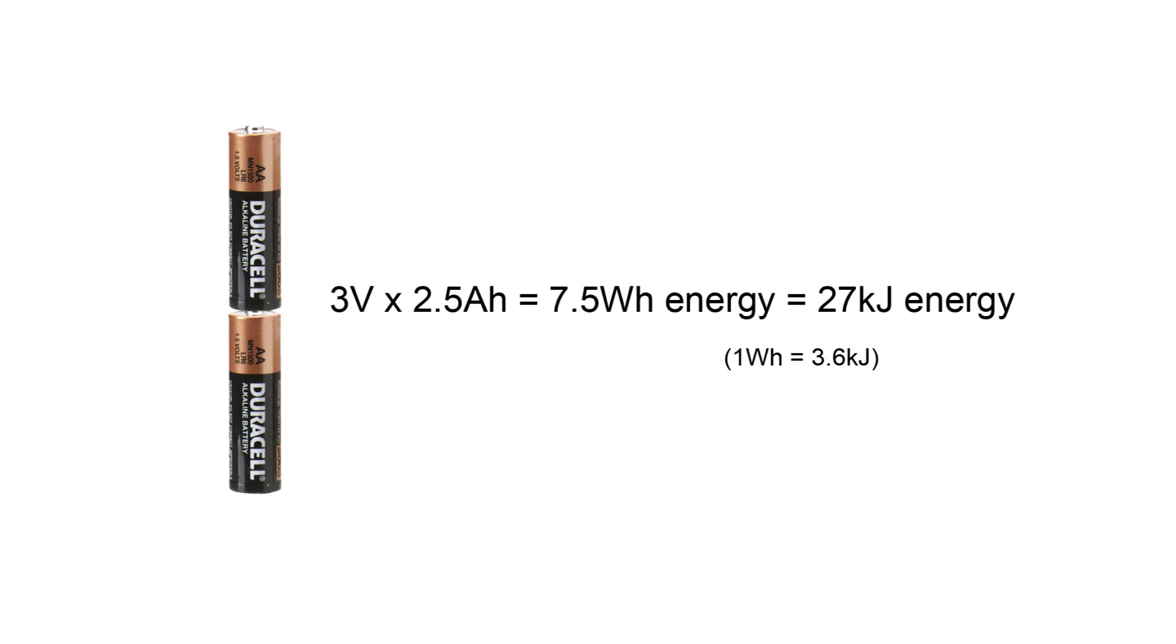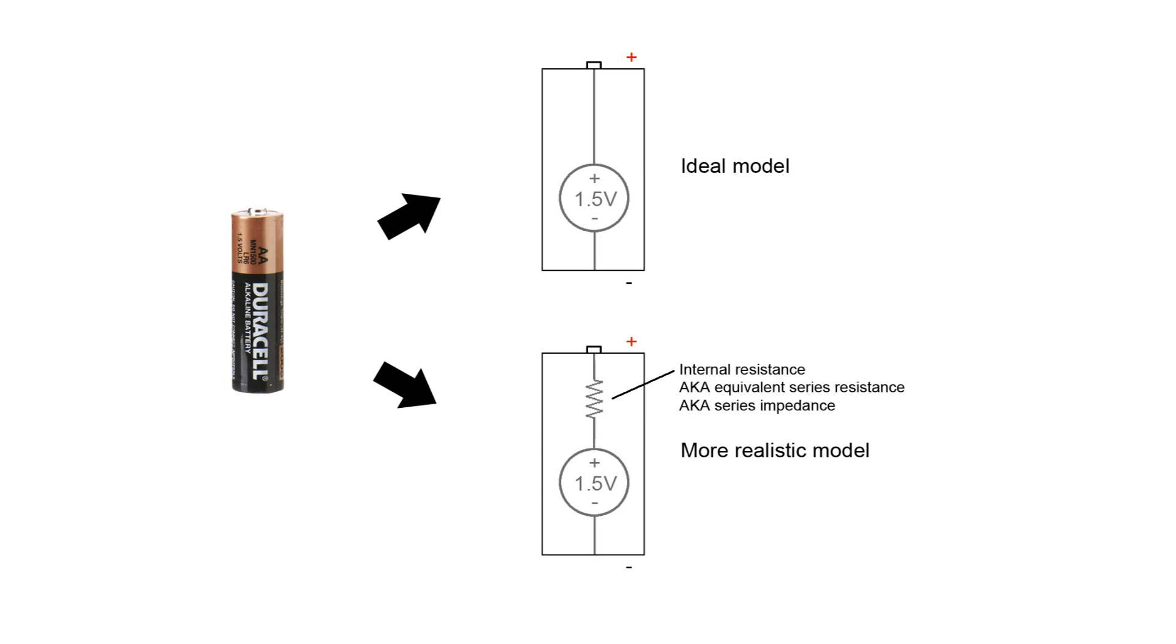So what's the difference? The answer is a non-ideal property called equivalent series resistance, ESR for short. Batteries, capacitors and a lot of other electronic components will have a small internal resistance which limits the amount of current that can flow.